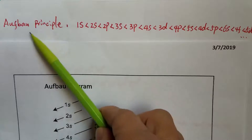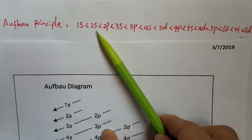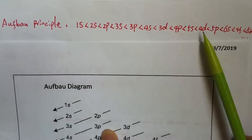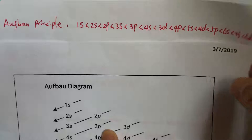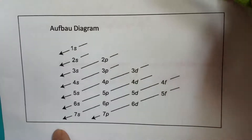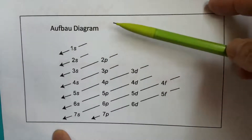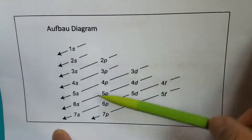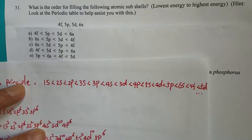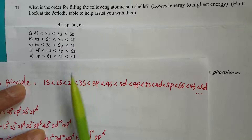If you can remember the Aufbau principle — 1s, 2s, 2p, 3s, and so on — you can use the Aufbau principle. Or if that's difficult for you to remember, you can always draw the Aufbau diagram by yourself. This way you will never get anything wrong. Using either way — either the Aufbau principle or the Aufbau diagram — you should be able to get this problem solved.